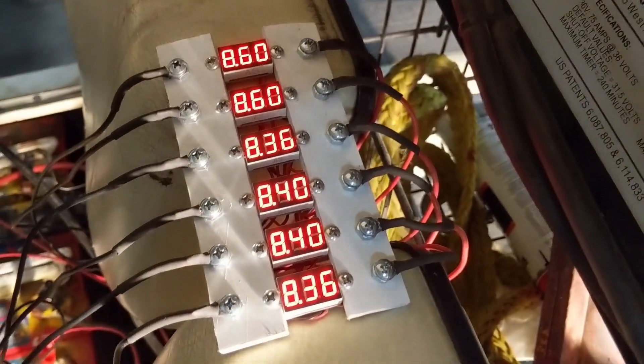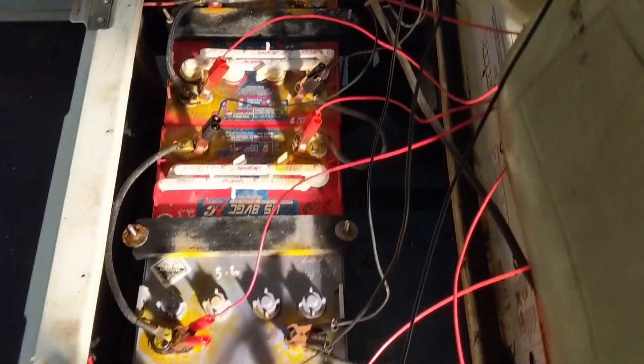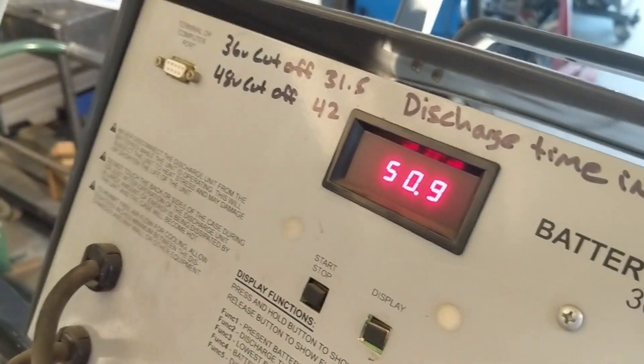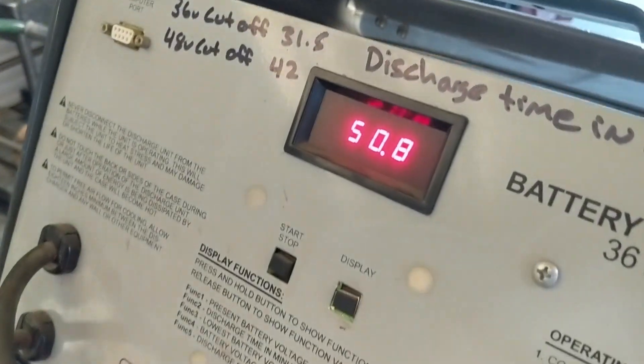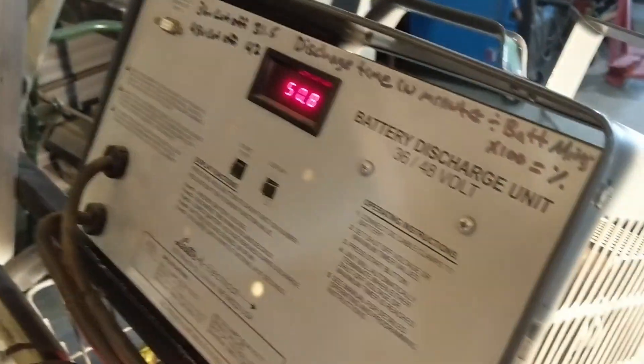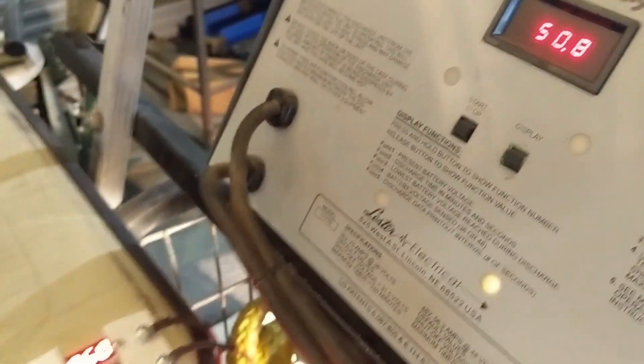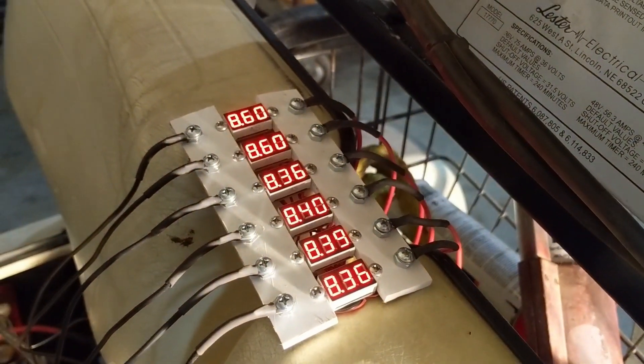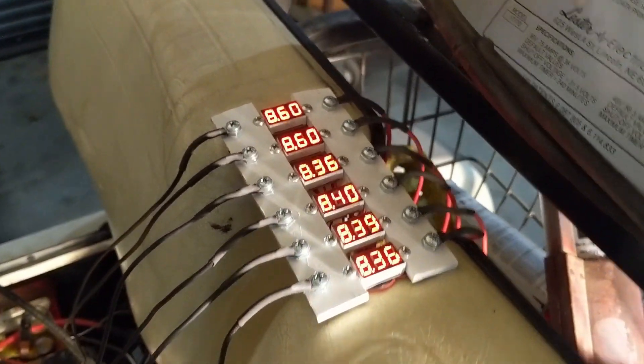Alright guys, so there it is all hooked up. What that is reading basically is the voltage of each of those batteries individually, and what that is reading is the total voltage of those batteries. So if we added all those together we would get that. Now nothing's turned on here right now. I'm going to turn the discharge unit on and you'll see the voltage start to drain in total.